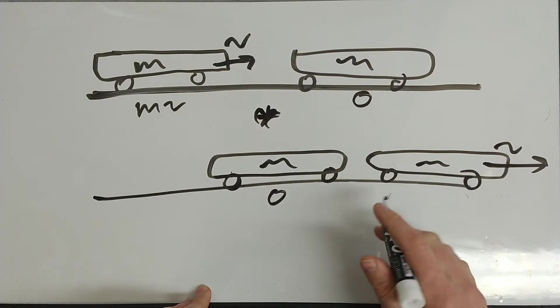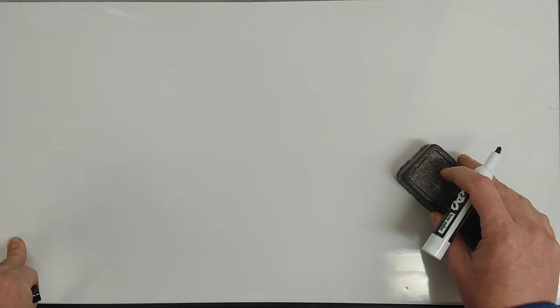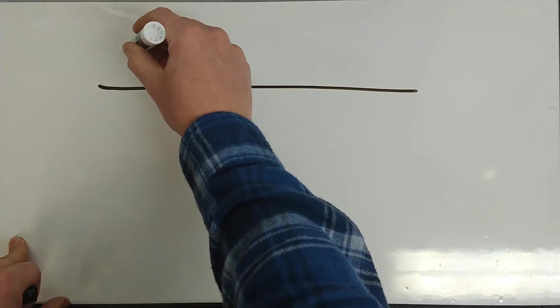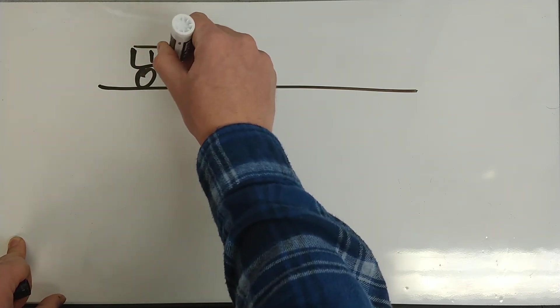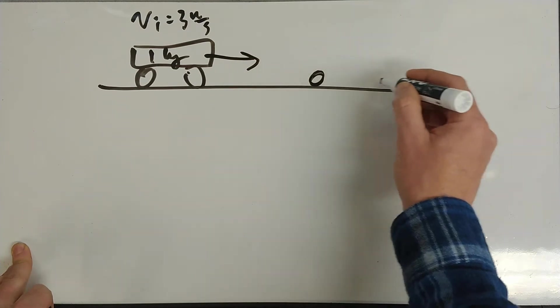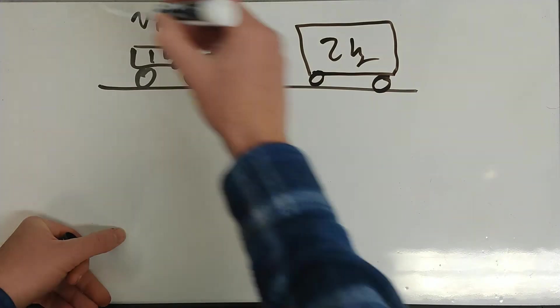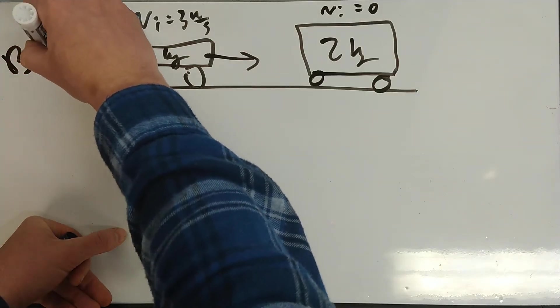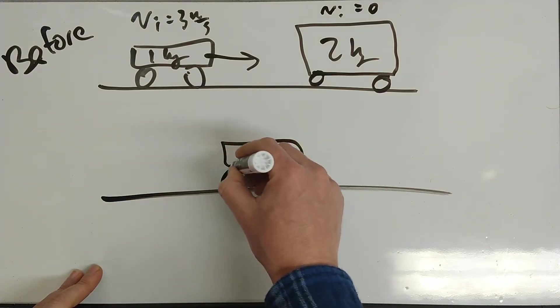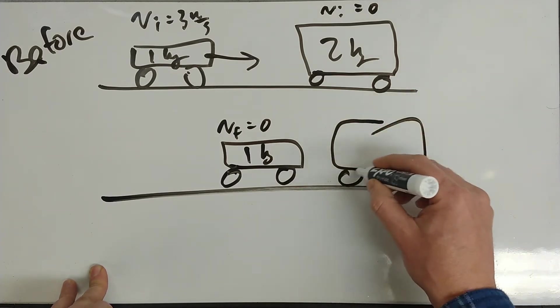If the masses are different, the velocity changes in proportion. Let me give you a numeric example. Let's say we have a cart, let's make it one kilogram to be easy, moving with an initial velocity of three meters per second. It hits a cart with mass of two kilograms. This would be v initial equals zero. That's before the collision. They collide. Let's say the incoming one kilogram cart stops, so v final equals zero for the one kilogram cart. I want to determine what velocity the two kilogram cart will move away with.